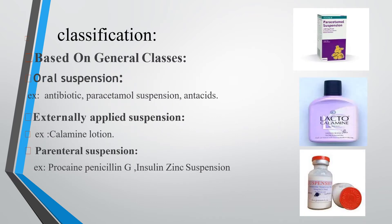Suspensions are classified into three groups based on general classes. First is oral suspension, examples include antibiotic suspensions, paracetamol suspension, and antacids. Second is externally applied suspension, which is topically applied to the skin — for example, calamine suspension.